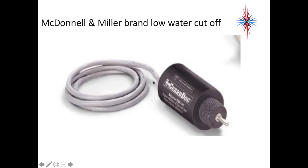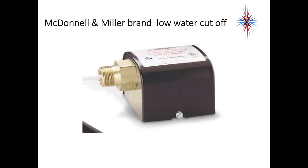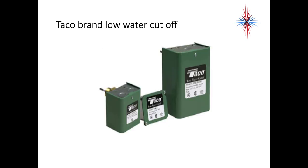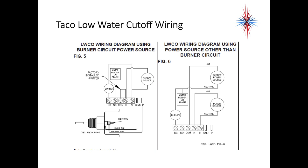This is an example of a low water cutoff that screws into a fitting on the boiler. This sensor uses an electrical current between the outside and the inside to sense that there's water in the system. Here's another one that uses water pressure. You can also see a wire diagram — it comes off the transformer furnished with the boiler, with a red, white, and a yellow wire that interrupts the power to the Aquastat. The whole purpose of this is that it interrupts power to the burner and will not allow the burner to fire if there's no water or too little water in the system.